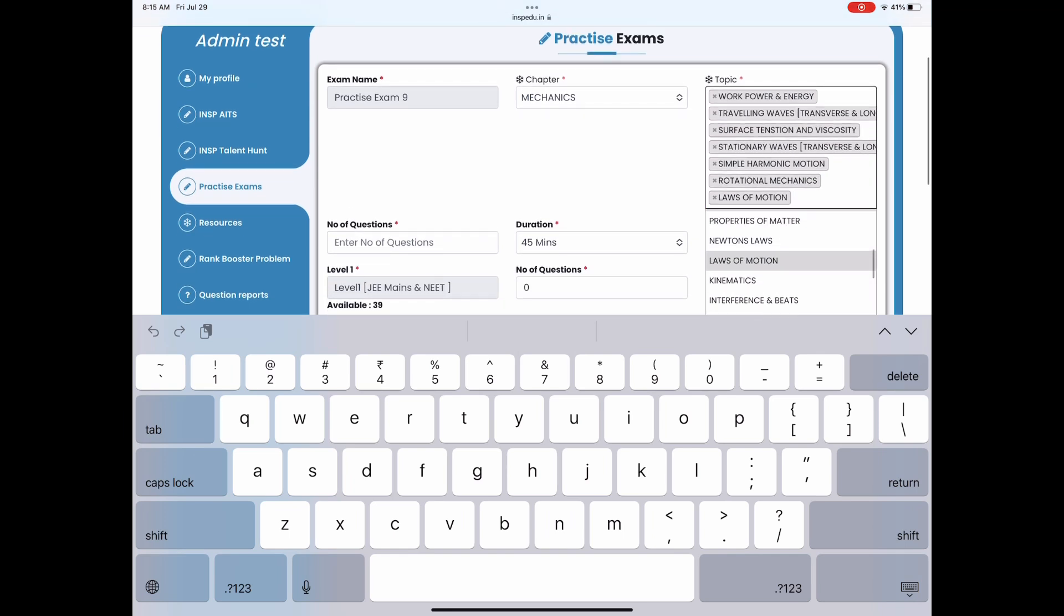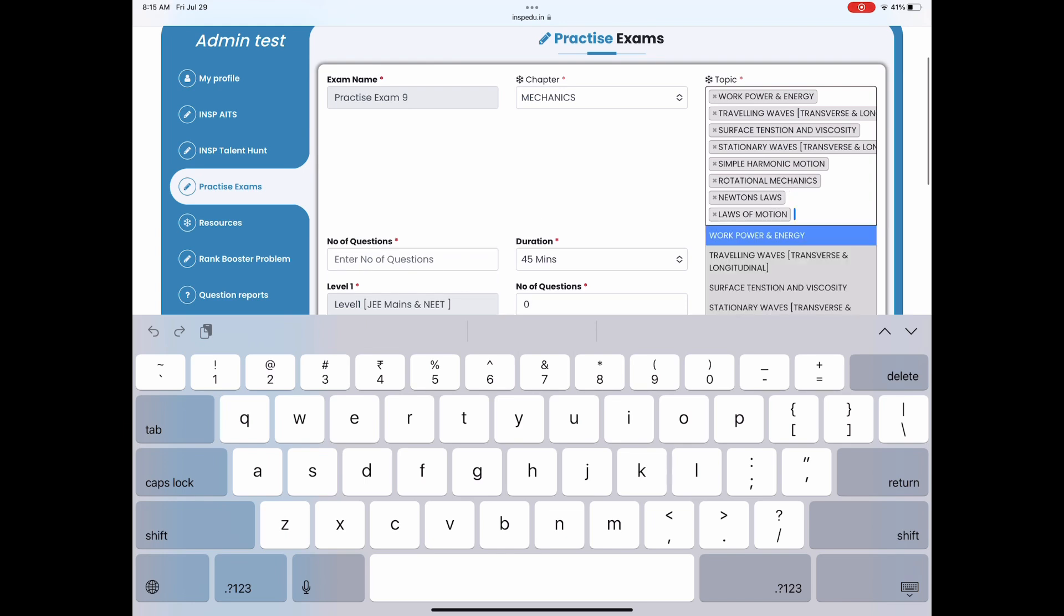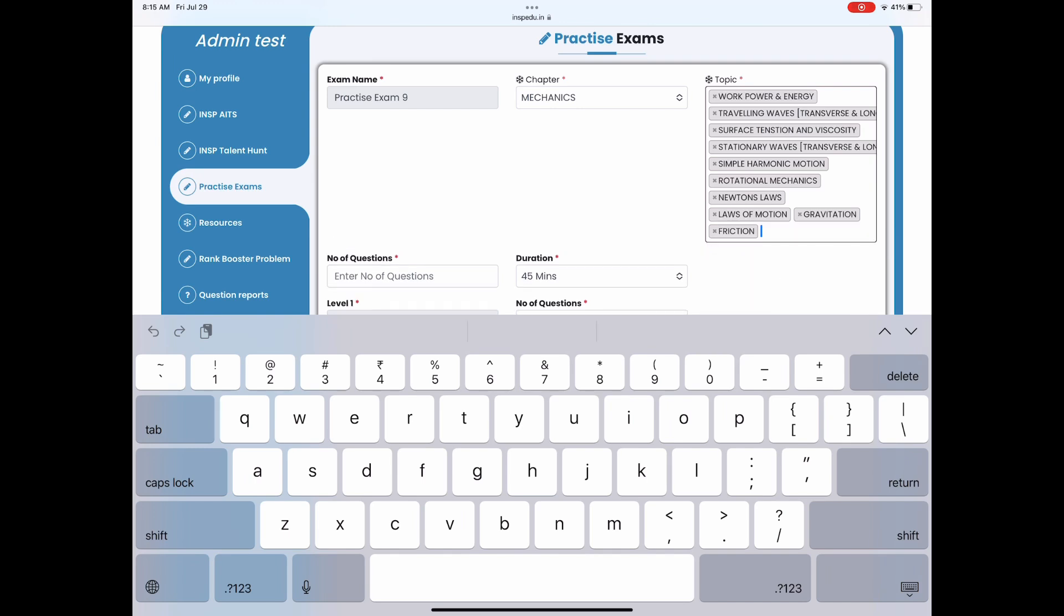Here you can see I am selecting simple harmonic motion and rotation and laws of motion. This is how we can create papers. One thing where you have to be careful when entering number of questions is you have to ensure that total number of questions in different levels is same.